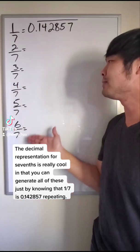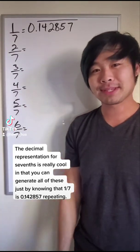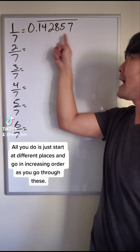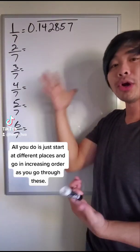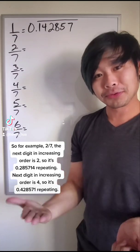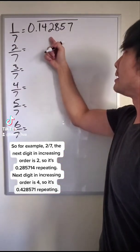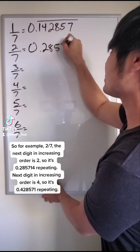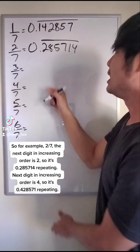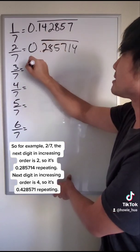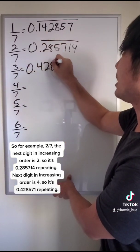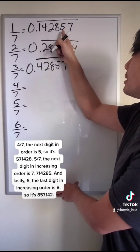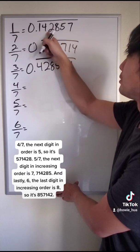The decimal representation for sevenths is really cool in that you can generate all of these just by knowing that one seventh is 0.142857 repeating. All you do is just start at different places and go in increasing order as you go through these. So for example, two sevenths, the next digit in increasing order is two. So it's 0.285714 repeating. Next digit in increasing order is four. So it's 0.428571 repeating. Four sevenths, the next digit in order is five. So it's 571428.